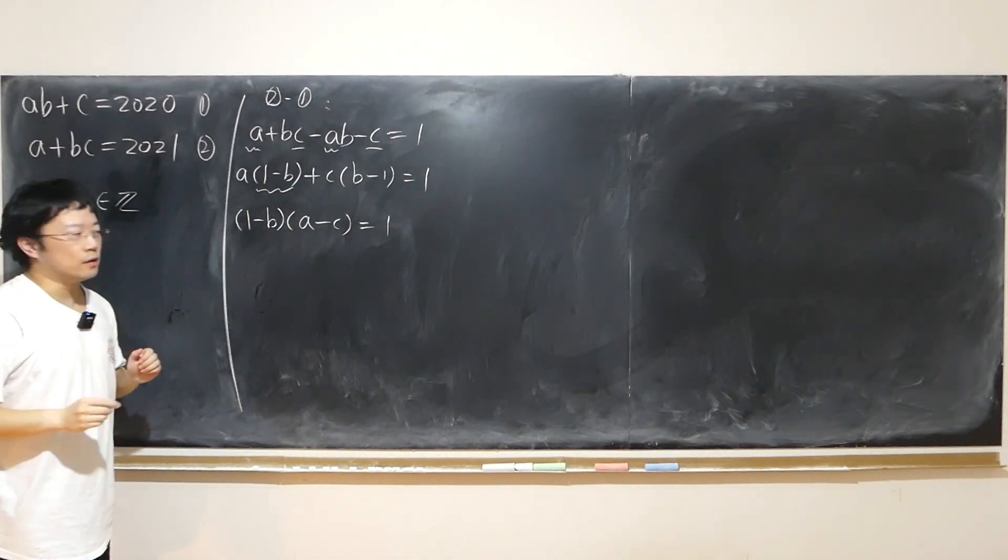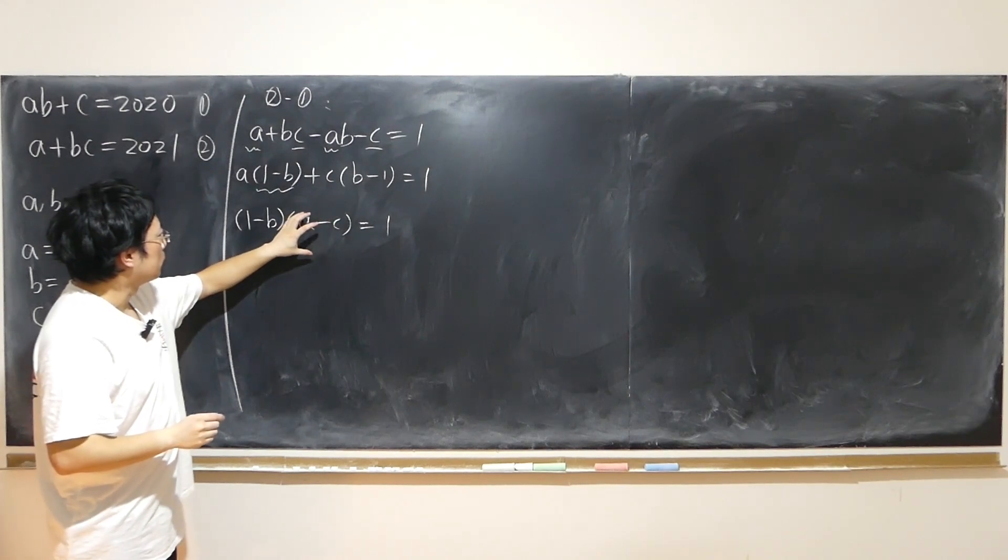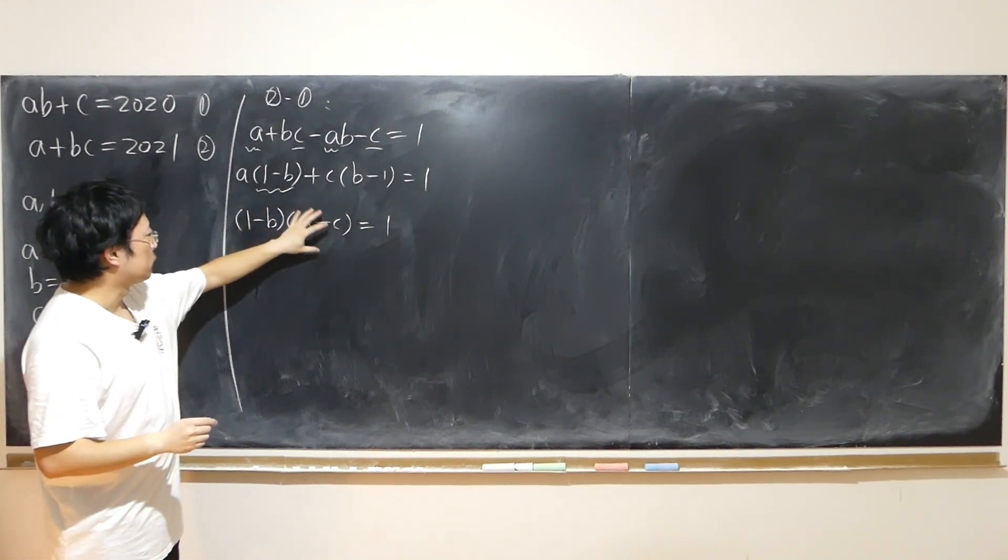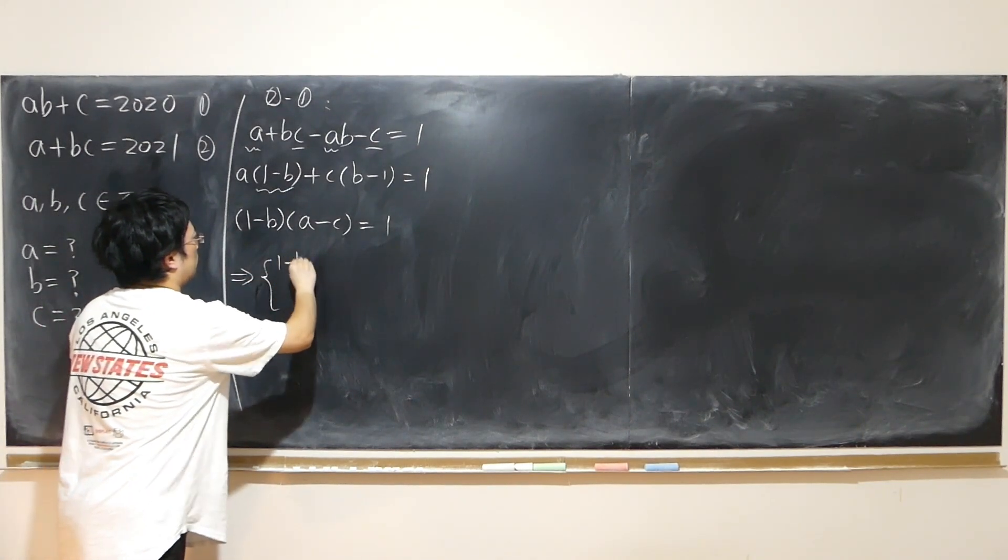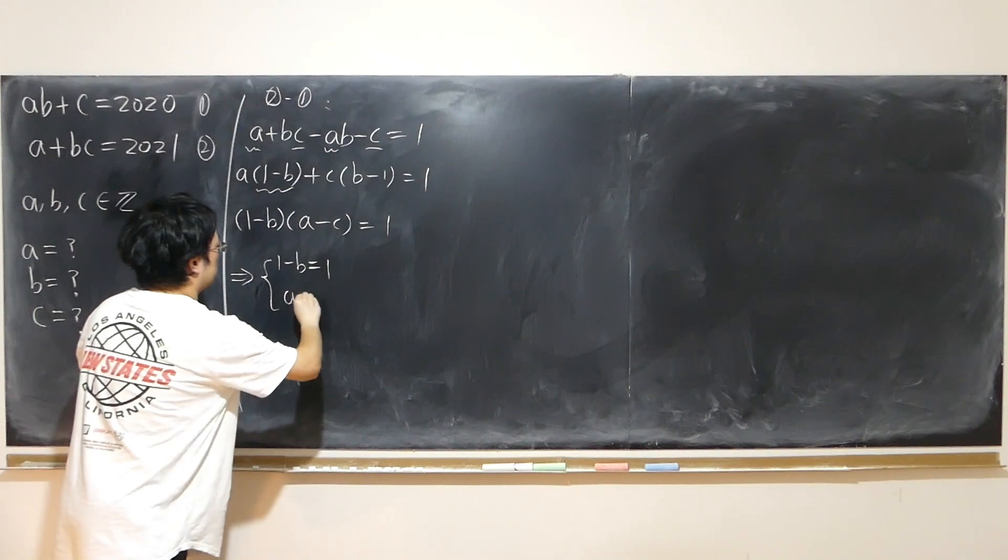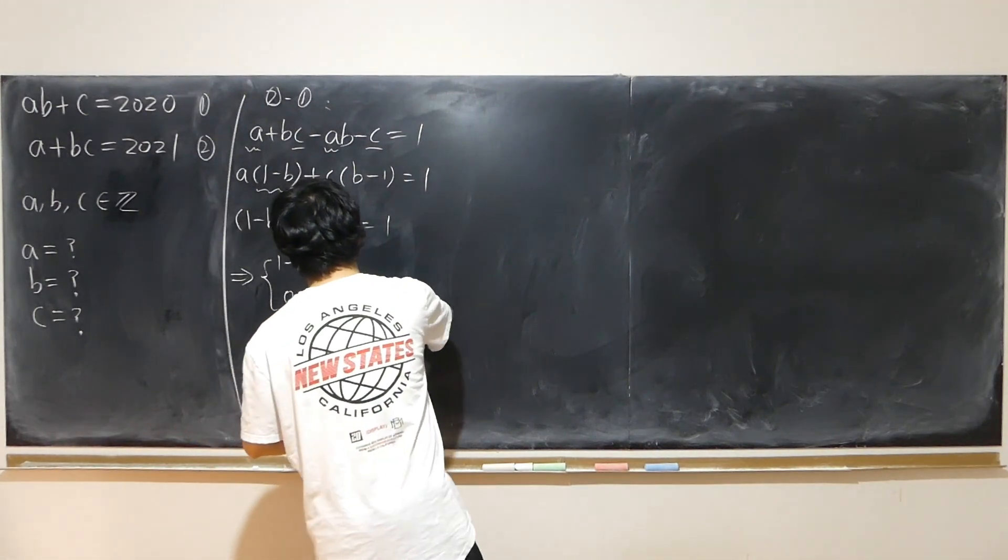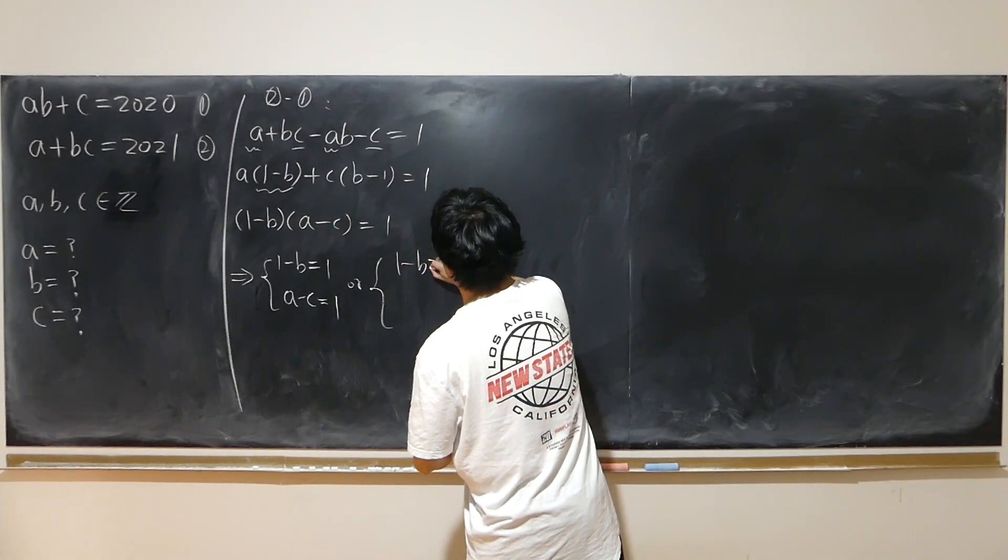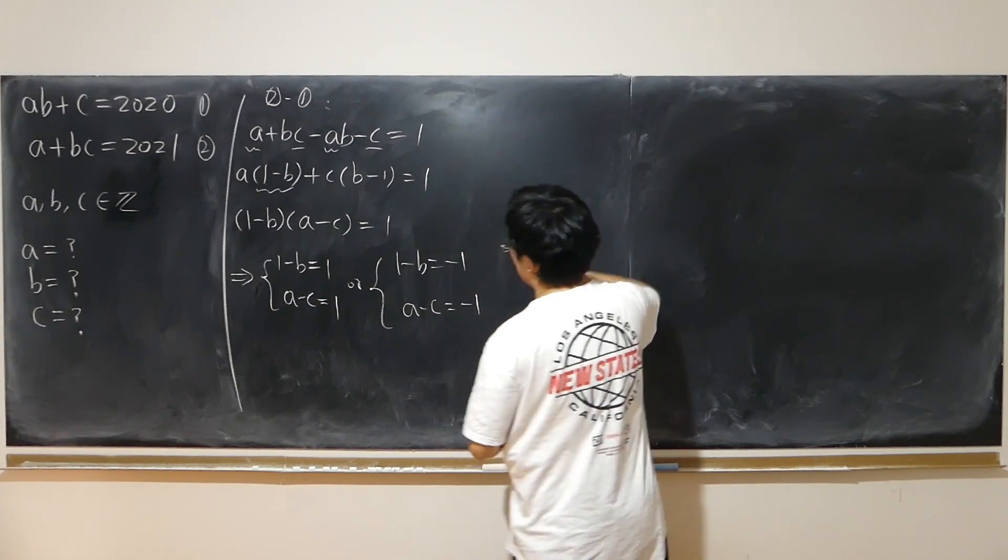There are only two possibilities, right? This and that, both be negative 1 or both 1 or both negative 1. So 1 minus b equals 1, a minus c equals 1. Or 1 minus b equals negative 1 and a minus c equals negative 1 also.